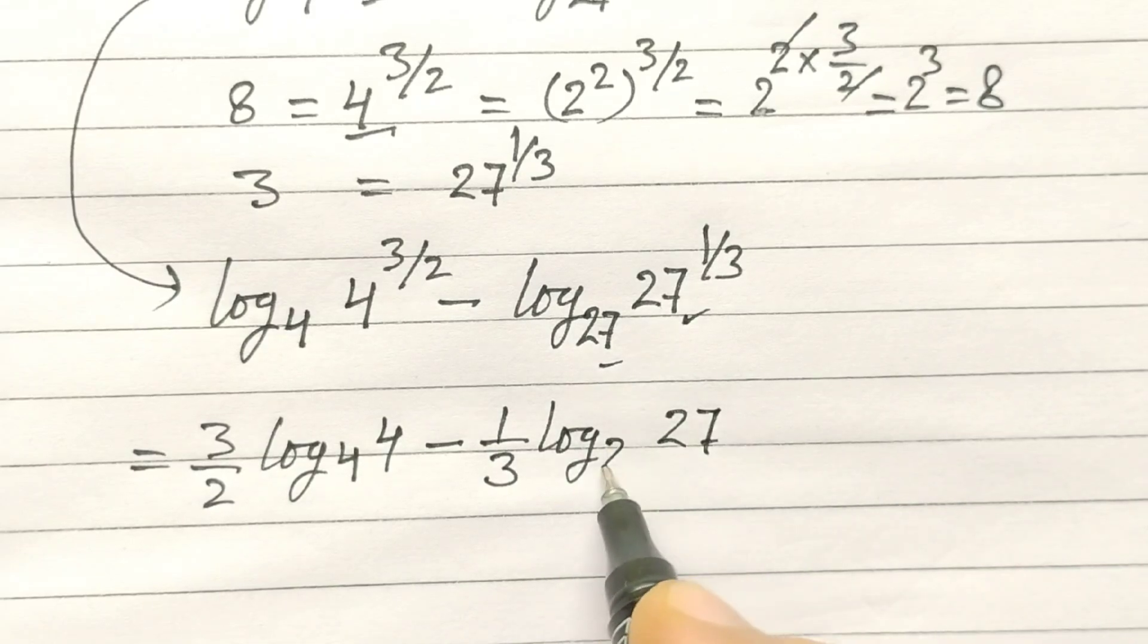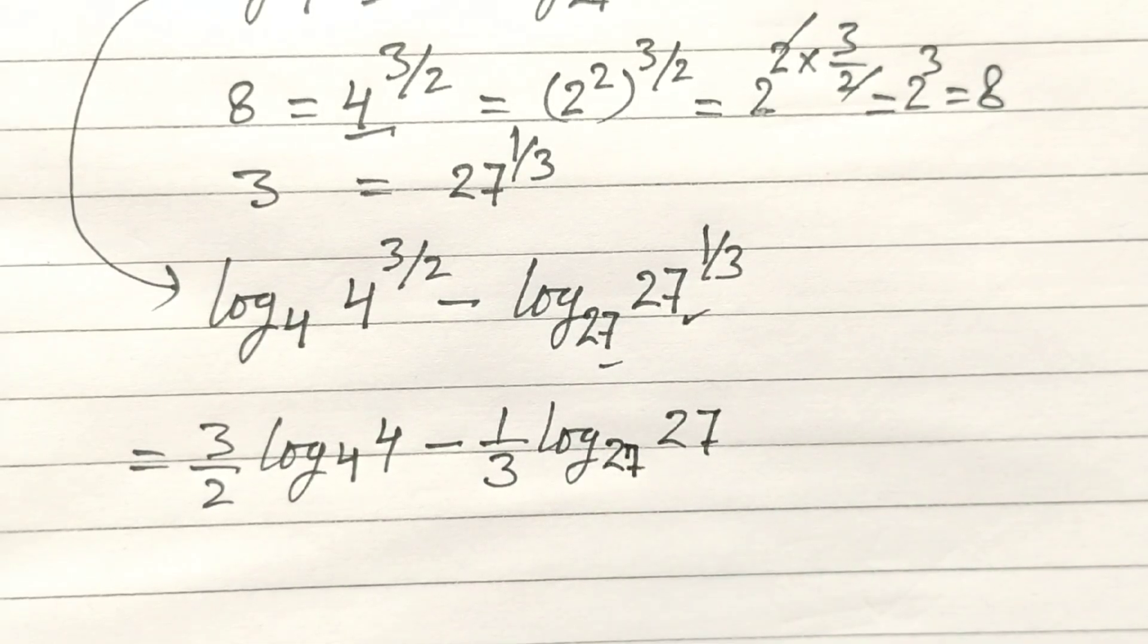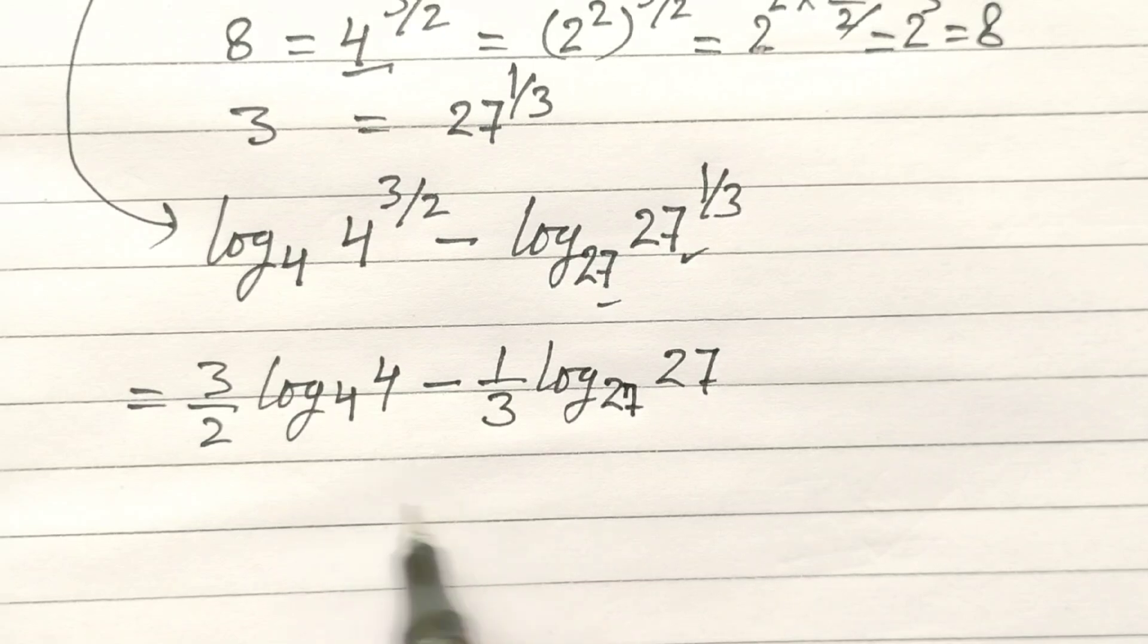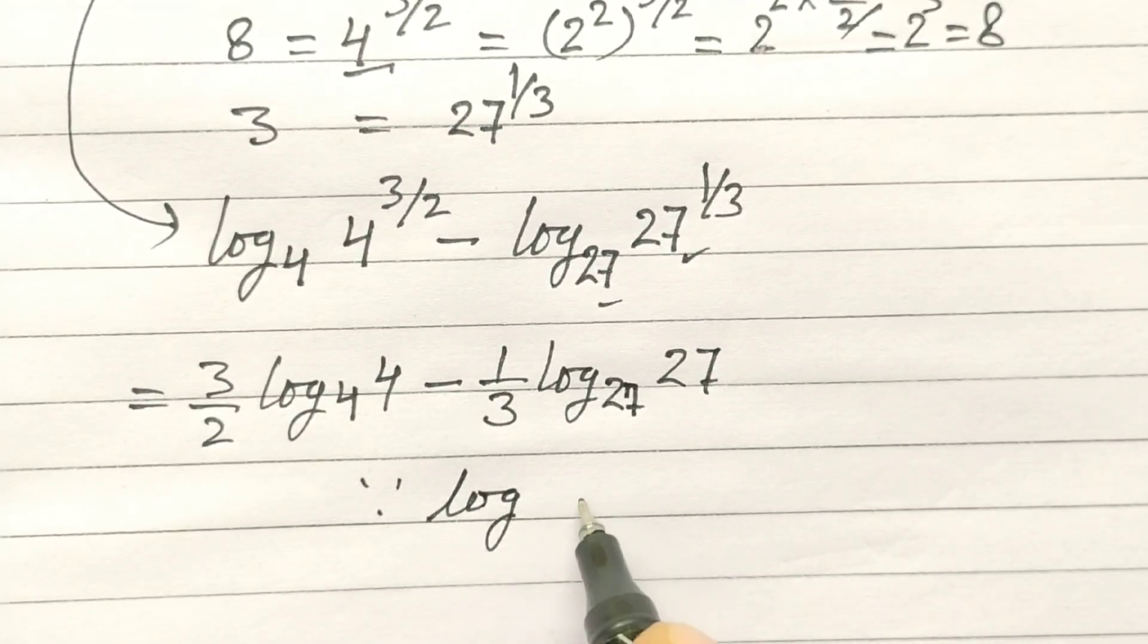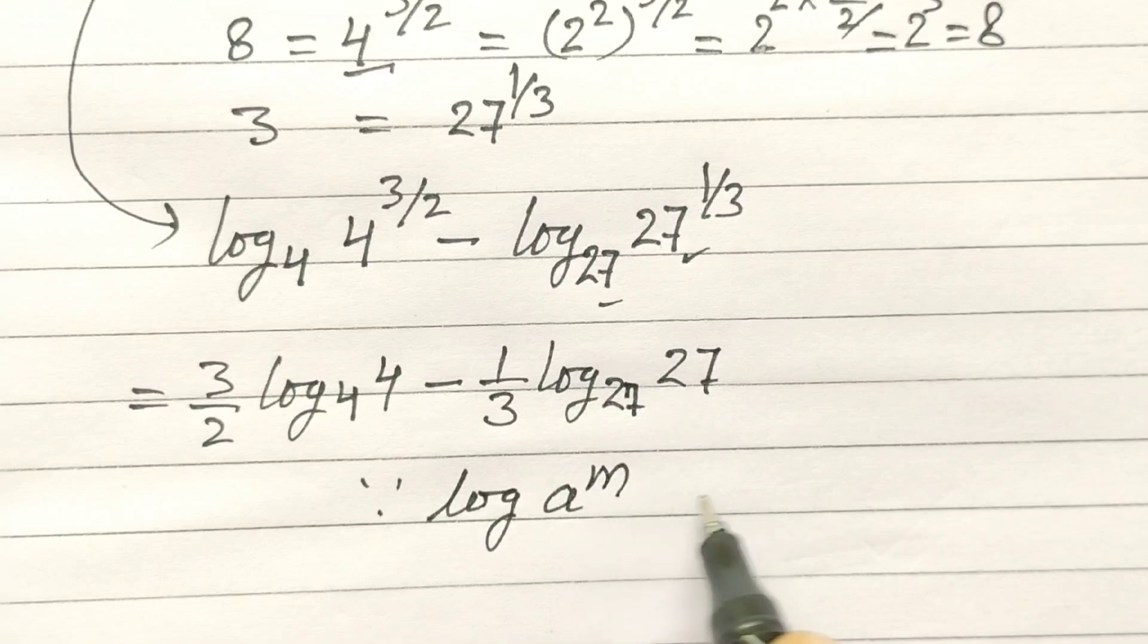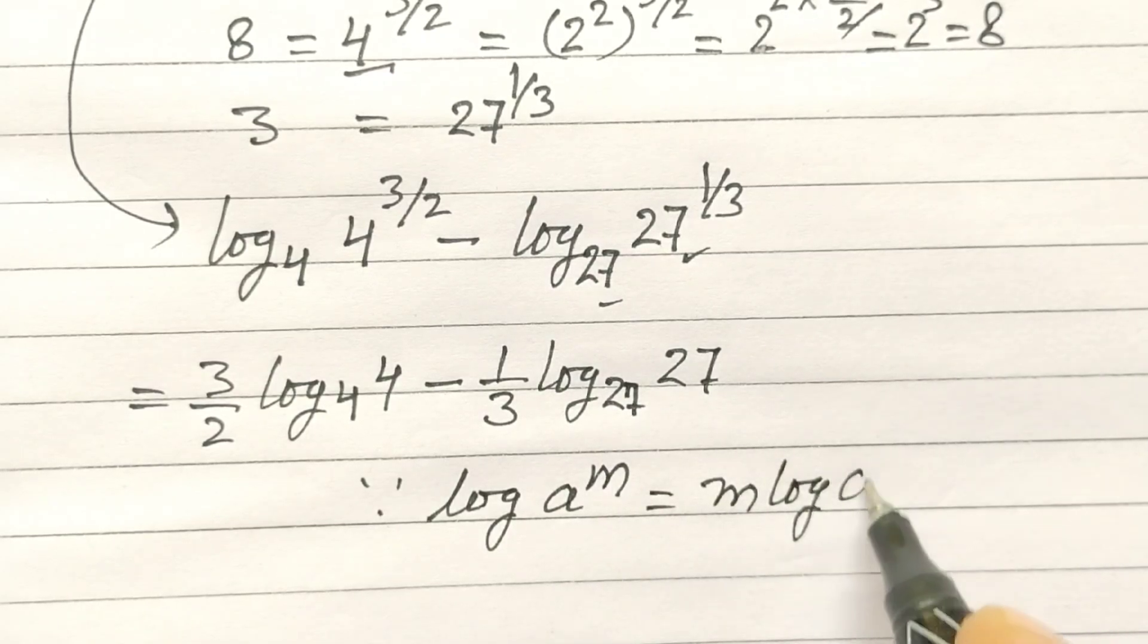Because log of a to the power m equals m log of a. So this is 3/2 times 1 minus 1/3 times 1.